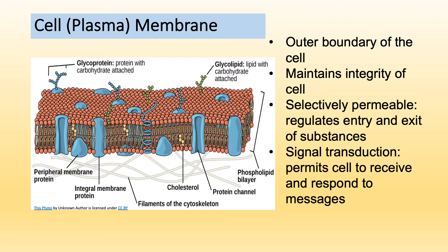The lipid bilayer gives the membrane its fluidity and elasticity. To give rigidity to the membrane, there are cholesterol molecules represented as tiny yellow dots in this picture. Cholesterol is another type of lipid that stabilizes the membrane, helps keep it impermeable to water-soluble substances, and ensures the plasma membrane has stability.